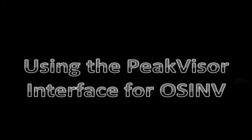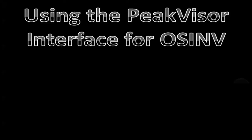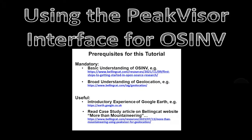Today we're going to basically learn to drive PeakVisor, so we won't earn our license particularly until this afternoon. We will look at the basic controls. These are the prerequisites for this tutorial — we're hoping that you have a basic understanding of open source investigation, an interest in geolocation, and some experience with Google Earth. It'd also be useful if you'd read the article on the website, but it wouldn't be the end of the world either way.